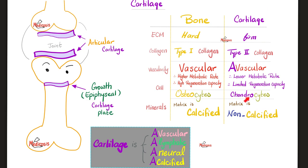The cells in the cartilage are the chondrocytes, and the matrix is not calcified under normal circumstances. If they become calcified, that's a disease — such as the famous osteoarthritis, which happens with old age. It's a degenerative joint disease.